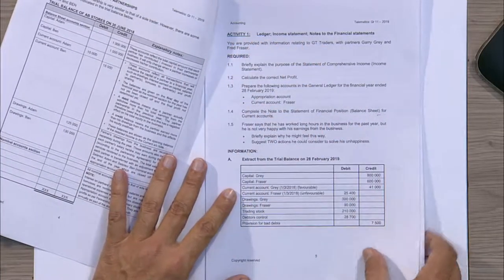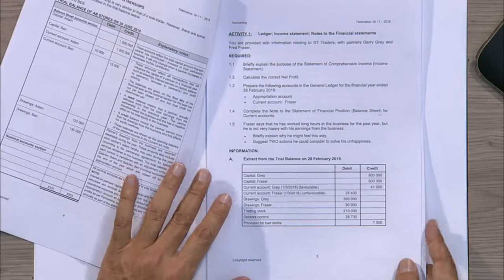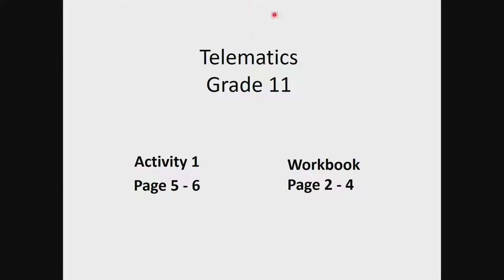Activity 1 covers the ledger, the statement of comprehensive income, as well as notes to the financial statements. For simplicity, we've divided the activity into different topics or blocks so that you can follow carefully when we're doing these broadcasts.